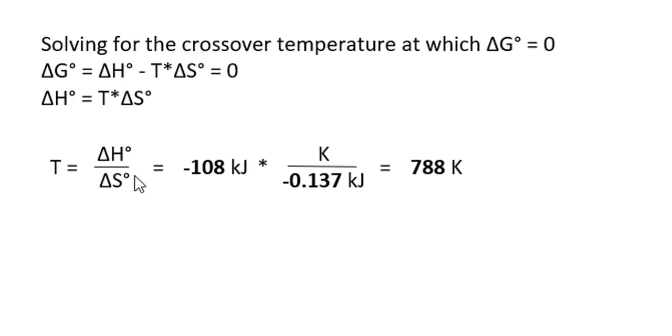Now we substitute in the values for ΔH and ΔS to determine the temperature at which ΔG is zero. That temperature is 788 Kelvin.